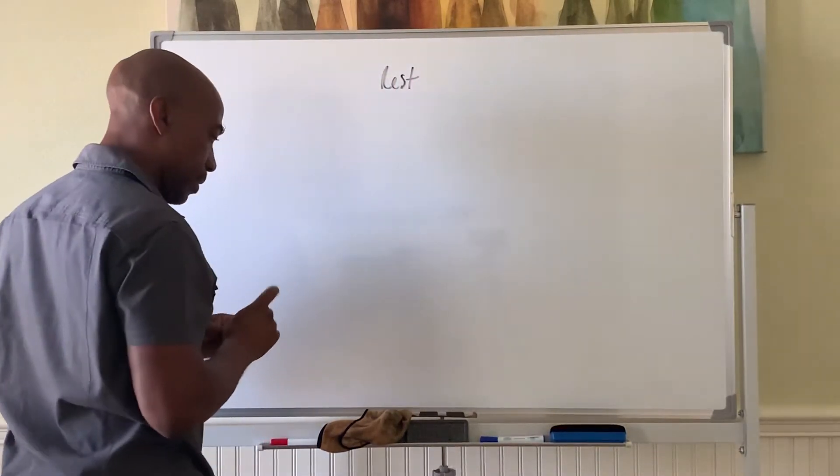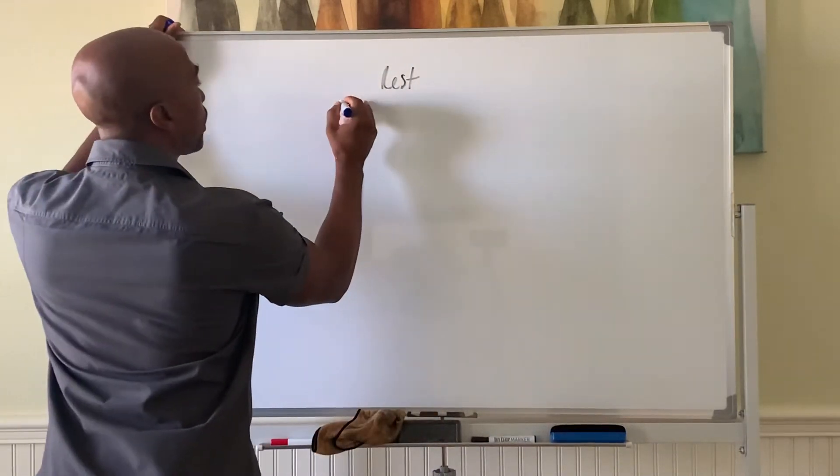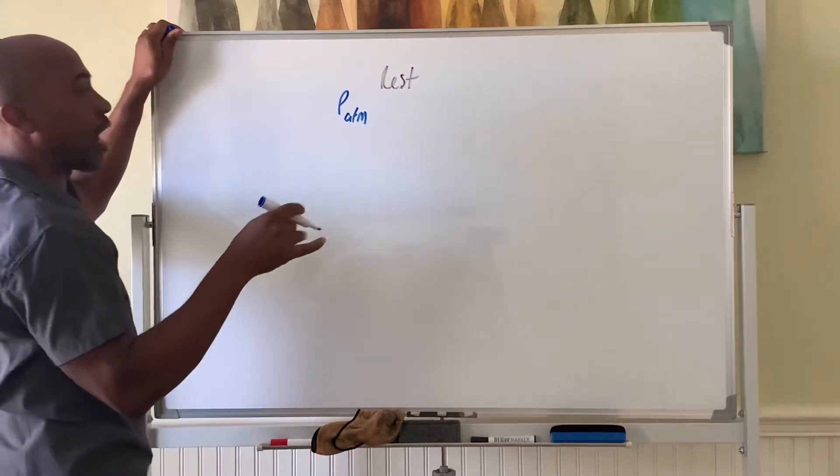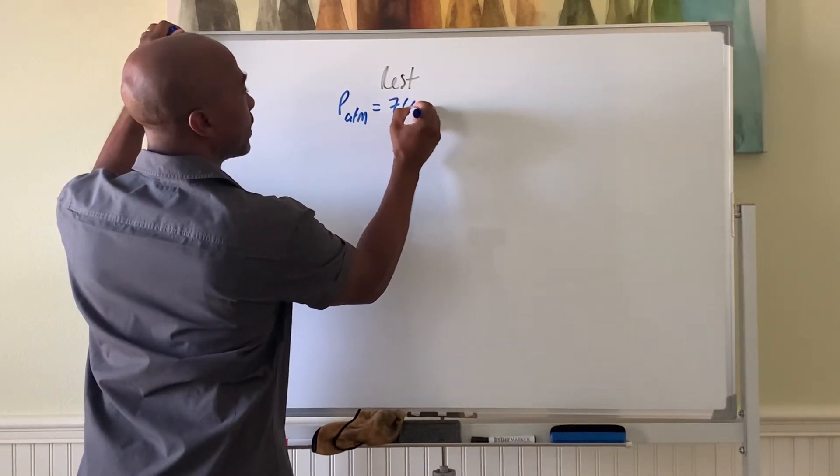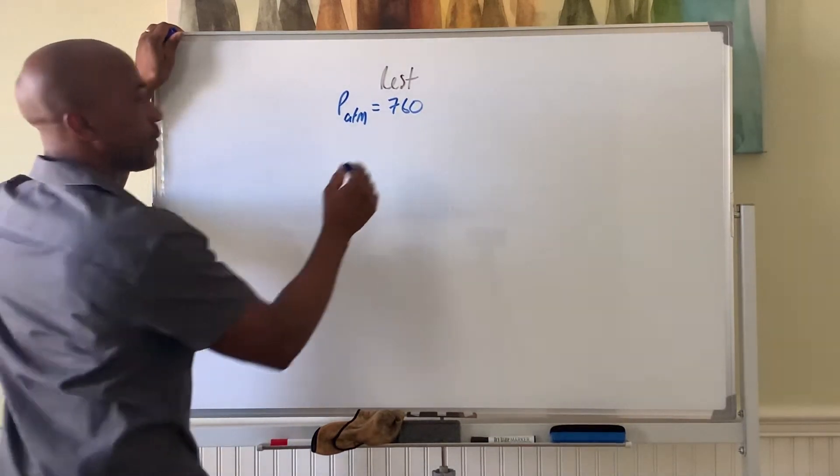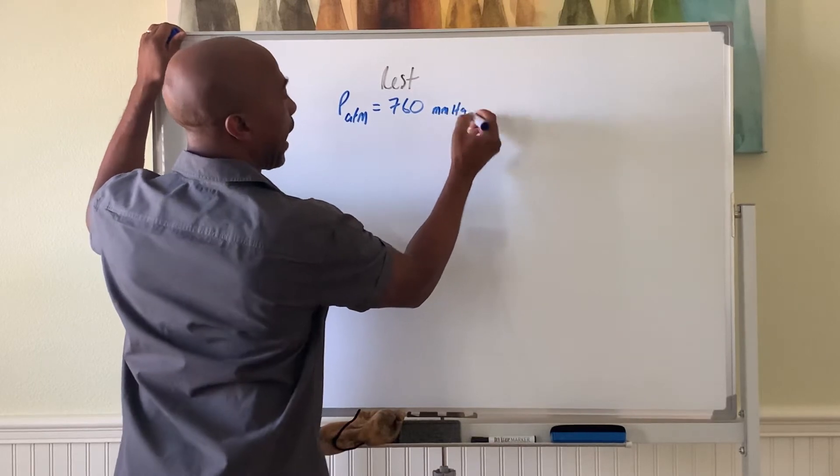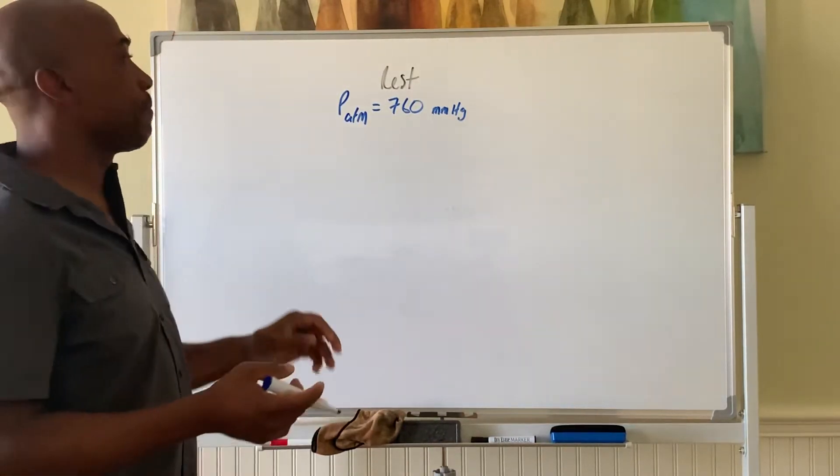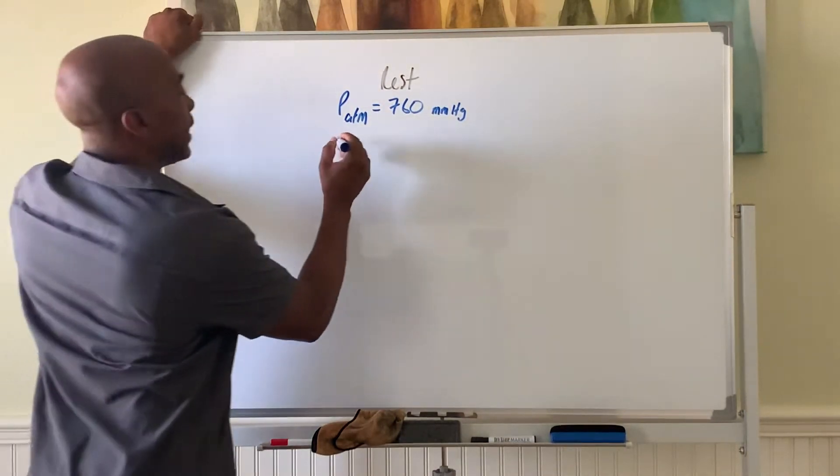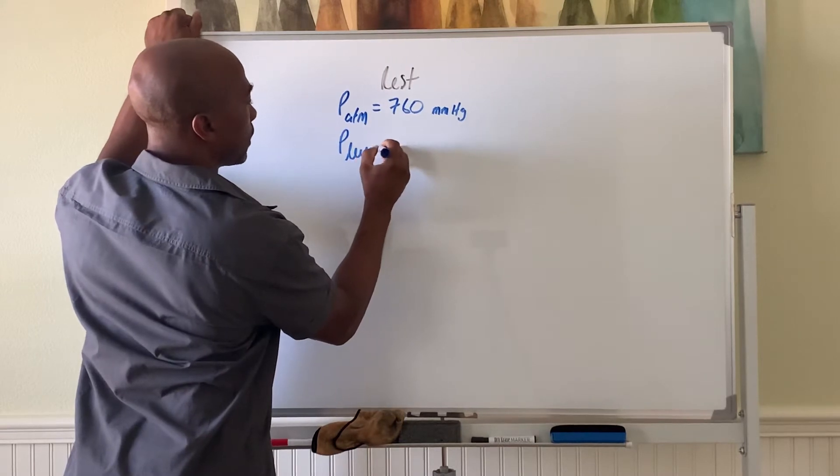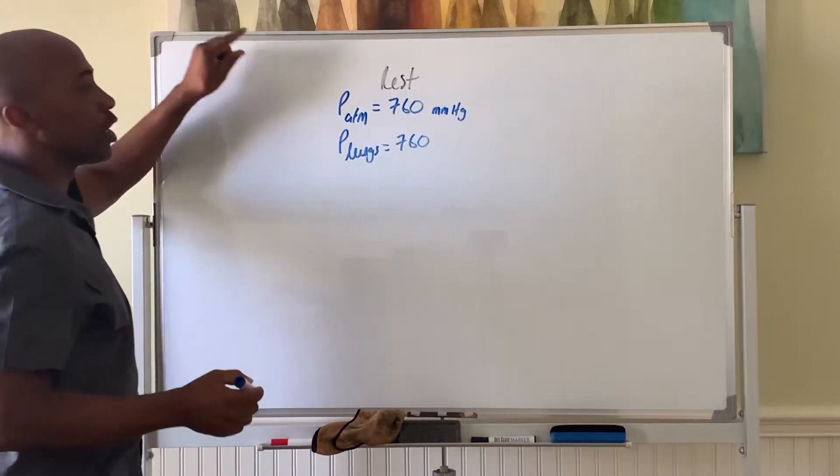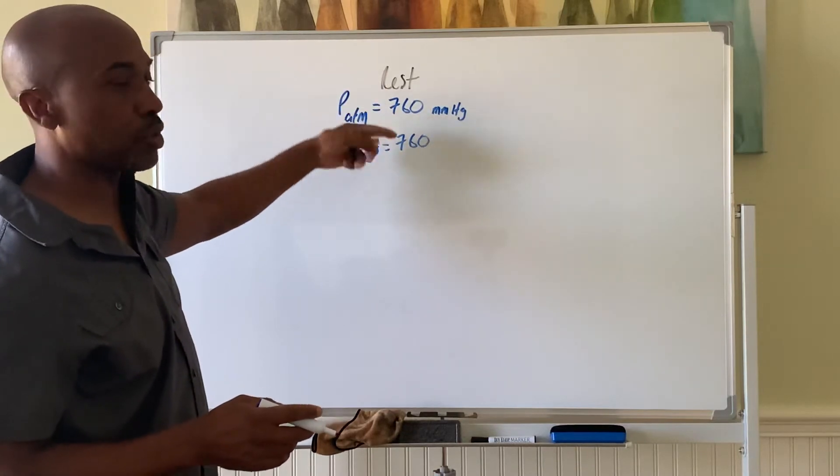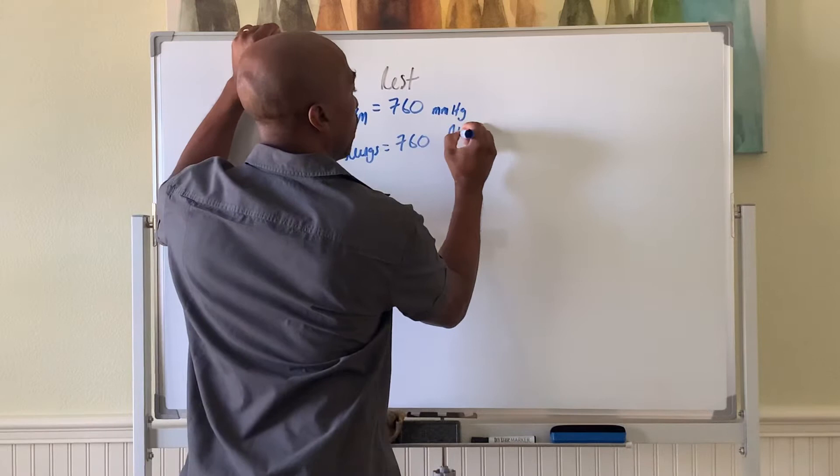So at rest, the pressure in the room, or wherever you are in the environment, it's called the pressure of the atmosphere, is equal to 760 mmHg. That is the typical ambient pressure across almost the entire world. And in our lungs, we call it P lungs, also equal to 760. So in this case, the reason why air is not moving is because the pressure is equal in both environments. So here there's no movement, because there is no difference to move the air.